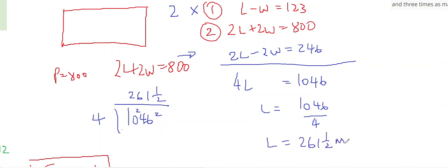So the length is 261 and a half meters, and then I can find the width. So what do I know? So 261.5 minus W equals 123. Therefore, if I move the W over, W equals 261.5 minus 123.